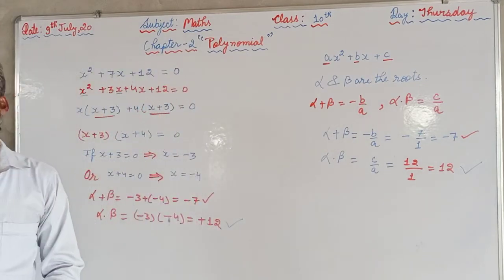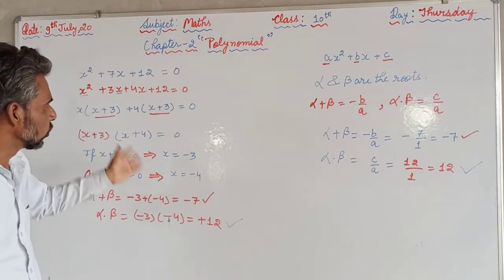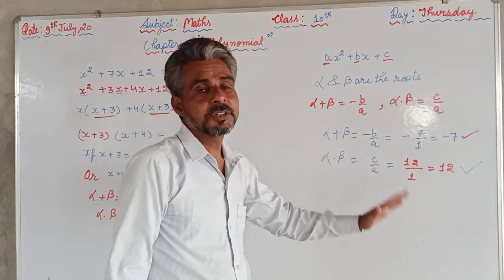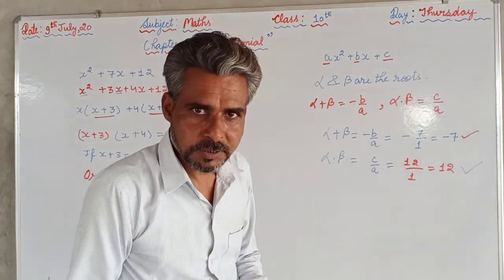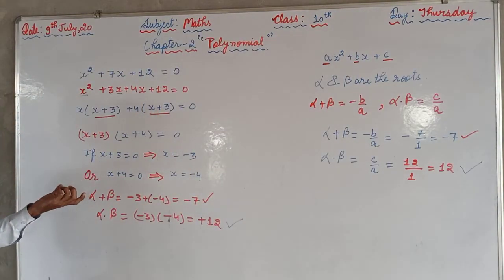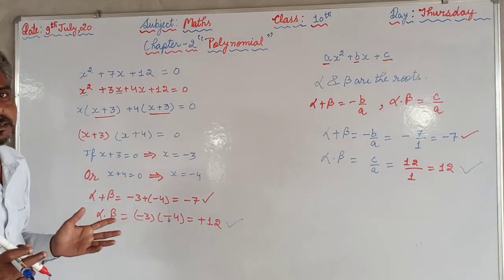In this way, we can find out the zeros of the polynomial, of quadratic polynomial, and we can verify the relation between the zeros and the coefficient of the polynomial. So how to find the zeros of quadratic polynomial by splitting the middle term.